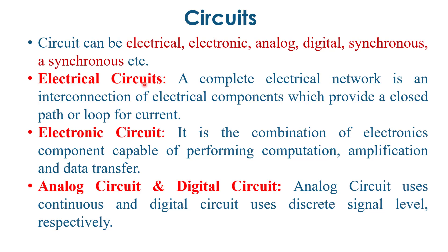What do we mean by electrical circuits? A complete electrical network is an interconnection of electrical components, or we can say that an electrical circuit consists of electrical components which provide a closed loop or closed path for current. An electronic circuit contains electronic components capable of performing computation, amplification, and data transfer.